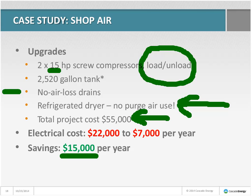If you have a bag house outside but the majority of air use is inside, you can install a master refrigerated dryer for all the air and put a small desiccant dryer only on the line that goes outside to the bag house. That way you have the best of both worlds without spending a ton of energy drying all compressed air down to a super-dry level.